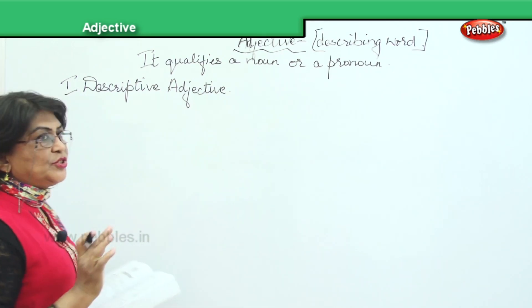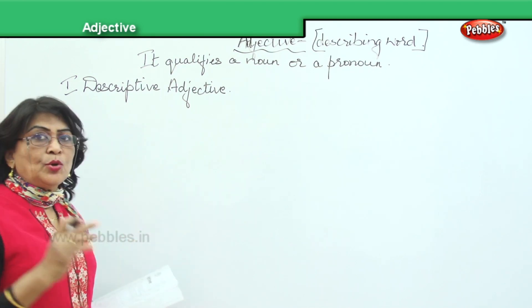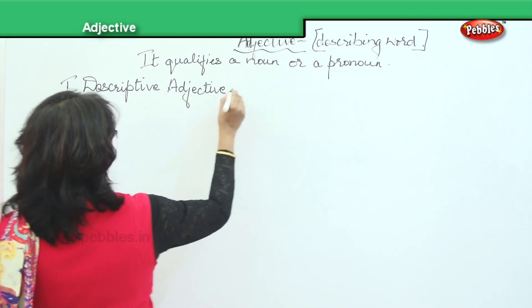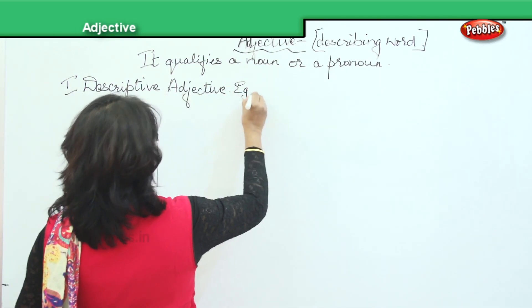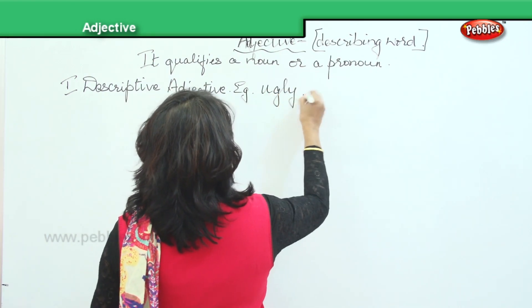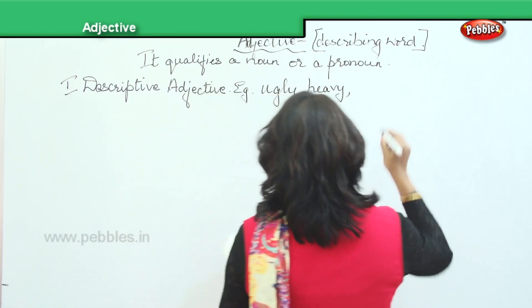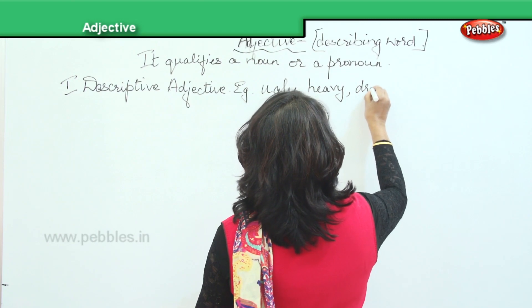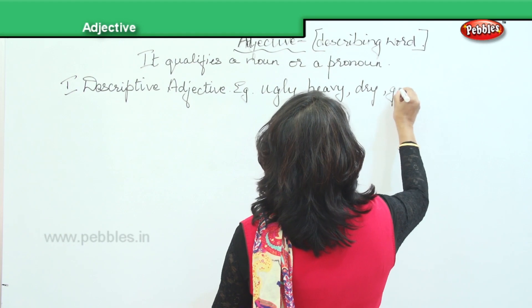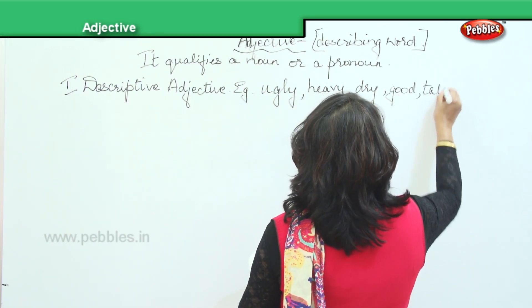A descriptive adjective — these descriptive adjectives always describe. For example: ugly, heavy, dry, good, tall, and so on.